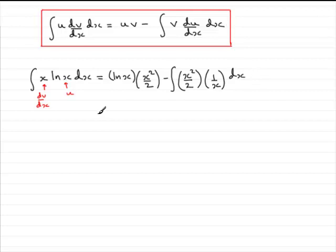So, we've got that. What I would want to do next is just tidy up the first term. And this would look better now as x squared over 2 at the front and natural log of x. Okay?